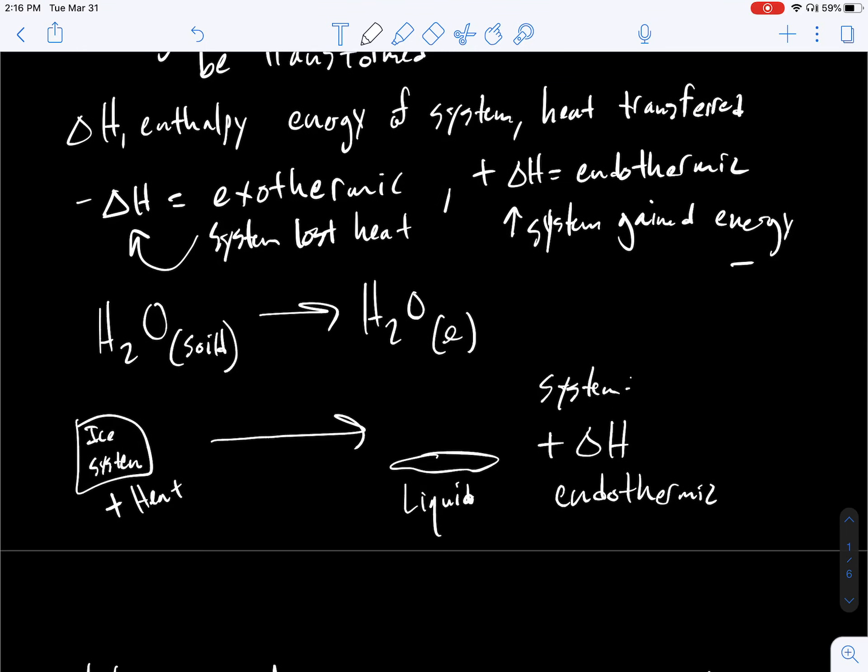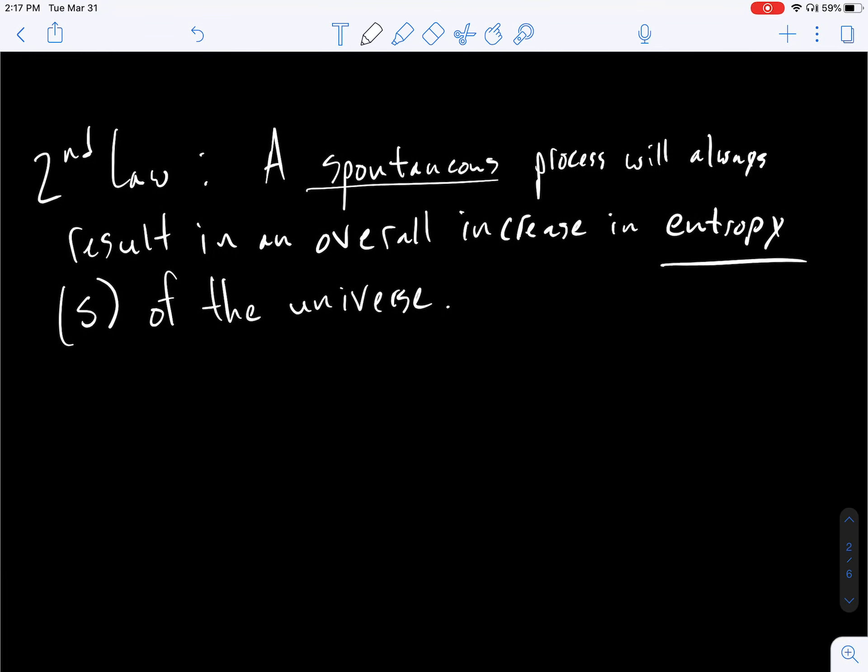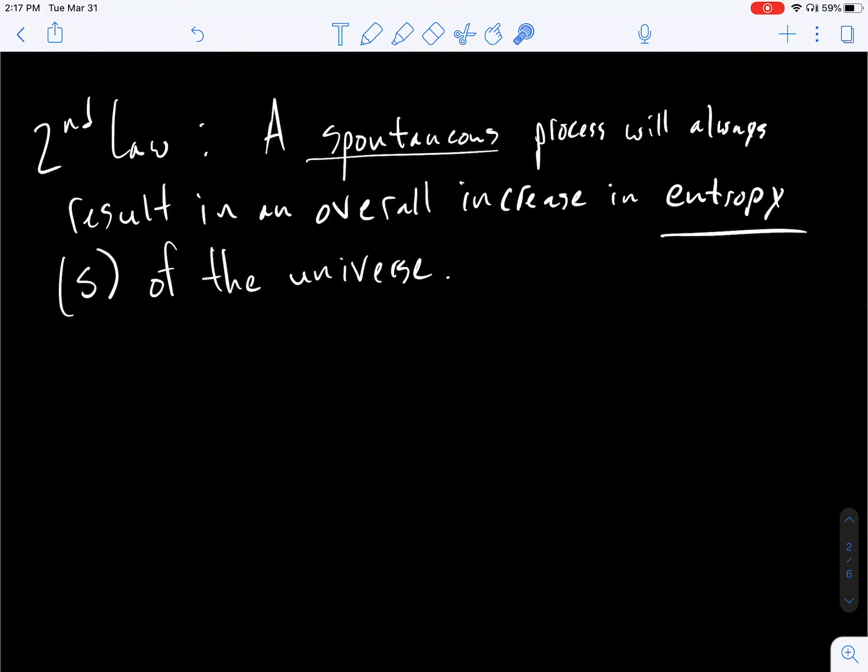So with that in mind, let's move on to the second law of thermodynamics in the context of this chapter here. So second law says a spontaneous process will always result in an overall increase in entropy, or S, of the universe. So second law has to do with randomness and spontaneity. We're going to focus more on the randomness first before we focus on spontaneity. So let's define entropy and talk about entropy for a second.